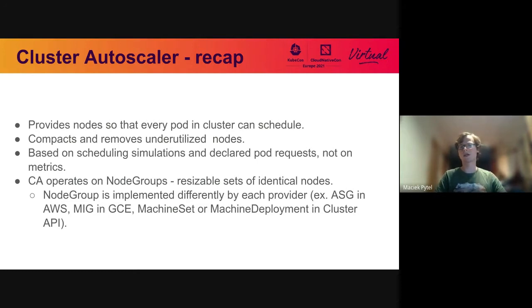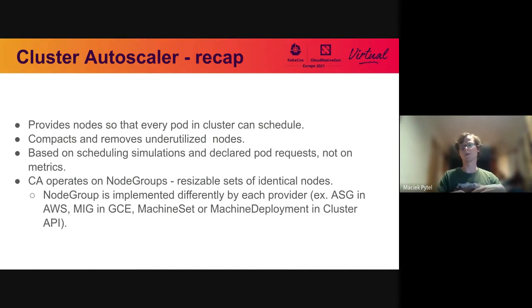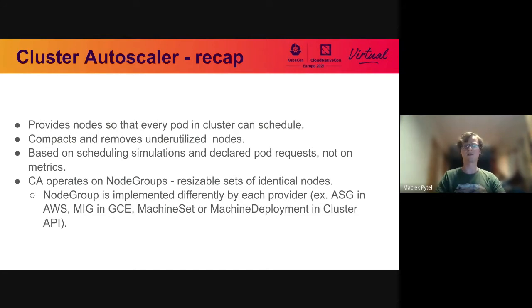What Cluster Autoscaler does not look at are actual metrics like real CPU usage or real memory usage. I also wanted to quickly cover one more concept: a node group. A node group is a resizable set of identical nodes, and this is how Cluster Autoscaler interacts with the underlying cloud — by modifying node groups. The node group is mapped to different concepts on each cloud provider: on AWS it can be an ASG, on GCE it's a MIG (managed instance group), and in Cluster API it can be a machine deployment.